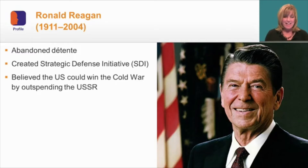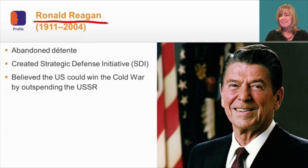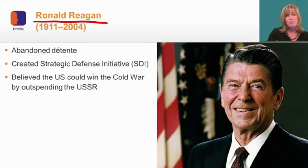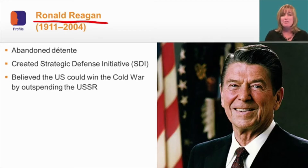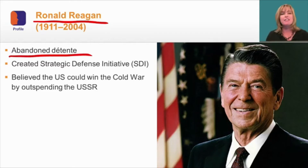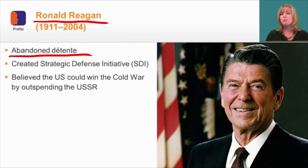President Ronald Reagan believed that previous administrations' approach to the Cold War had been a failure. He thought that containment had not worked, and he proclaimed that the U.S. was going to have a new policy: to win. So he abandoned detente, feeling that negotiating with the Soviets hadn't produced results — for example, the Soviets had invaded Afghanistan to spread communism. In his effort to win the Cold War, he was going to take a couple of actions.